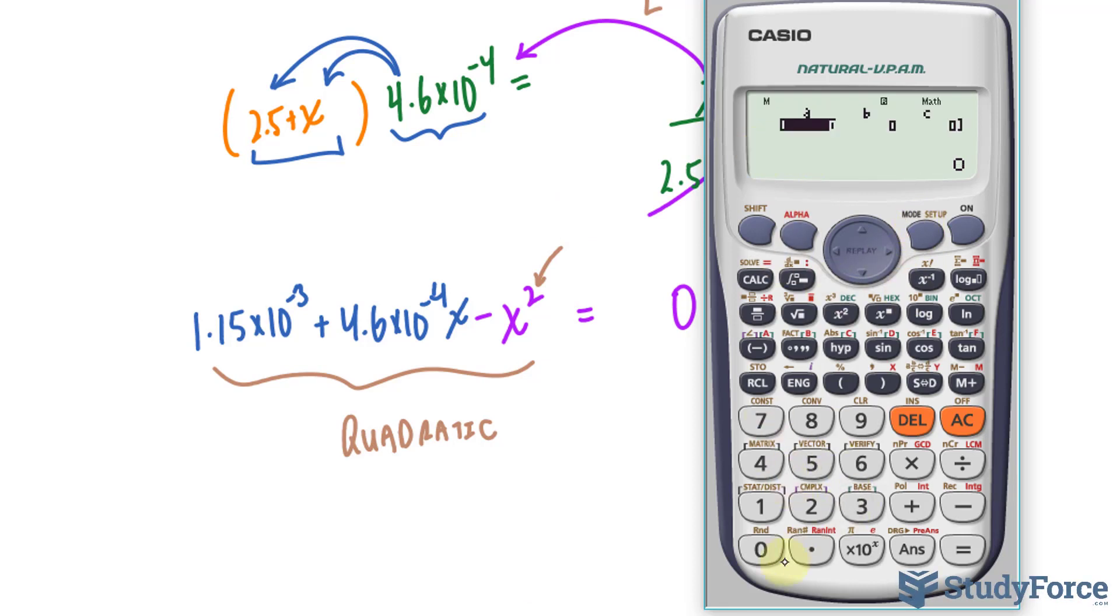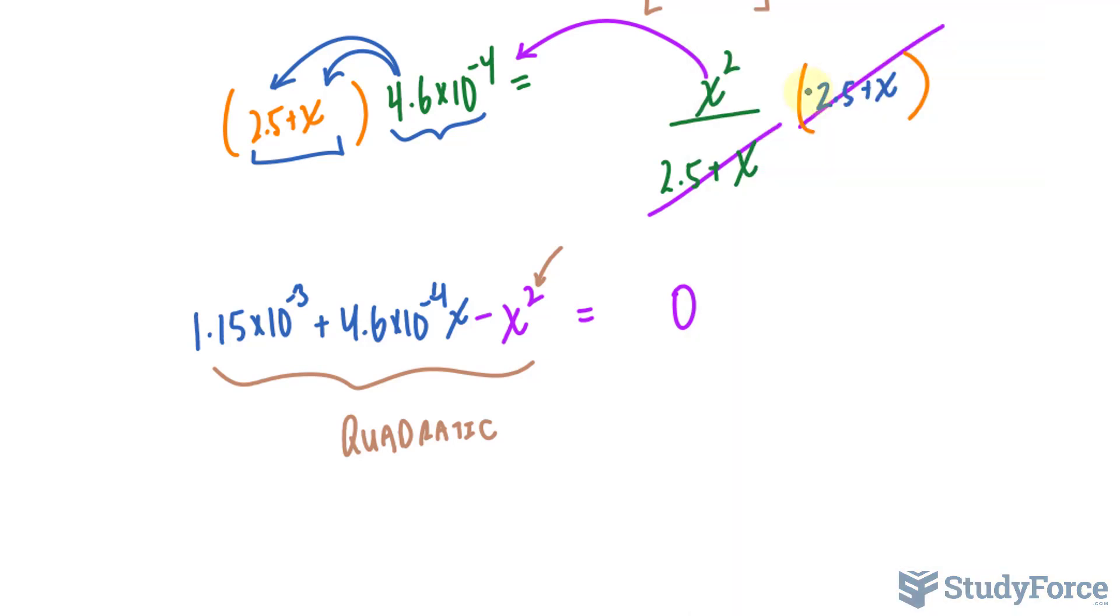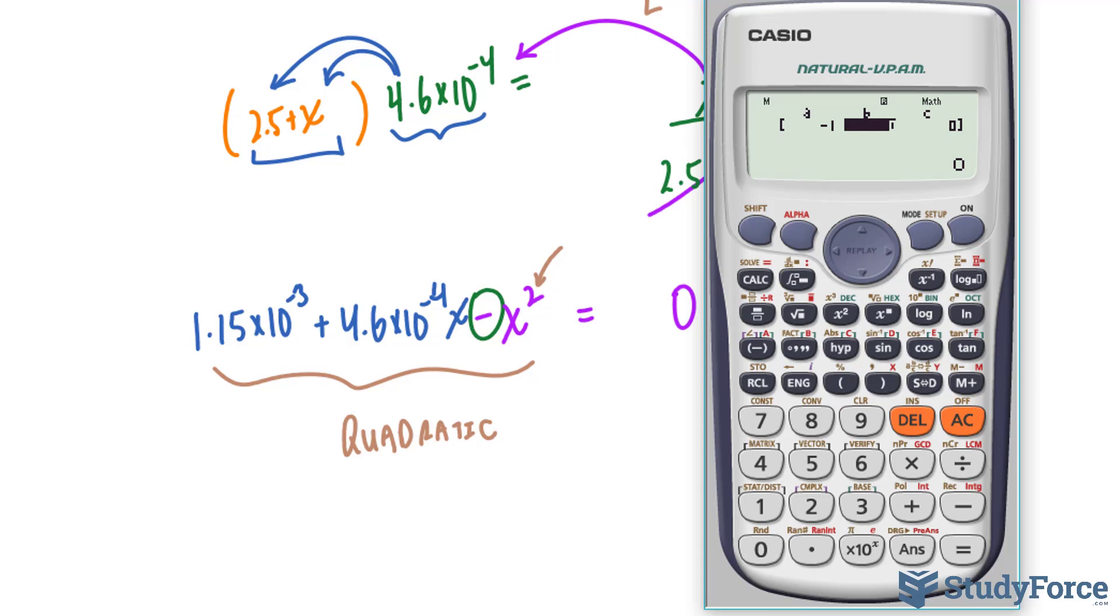I'll substitute the coefficients in for A, B, and C. The coefficient for A is negative 1, so negative 1. The coefficient for B is 4.6 times 10 raised to the power of negative 4.